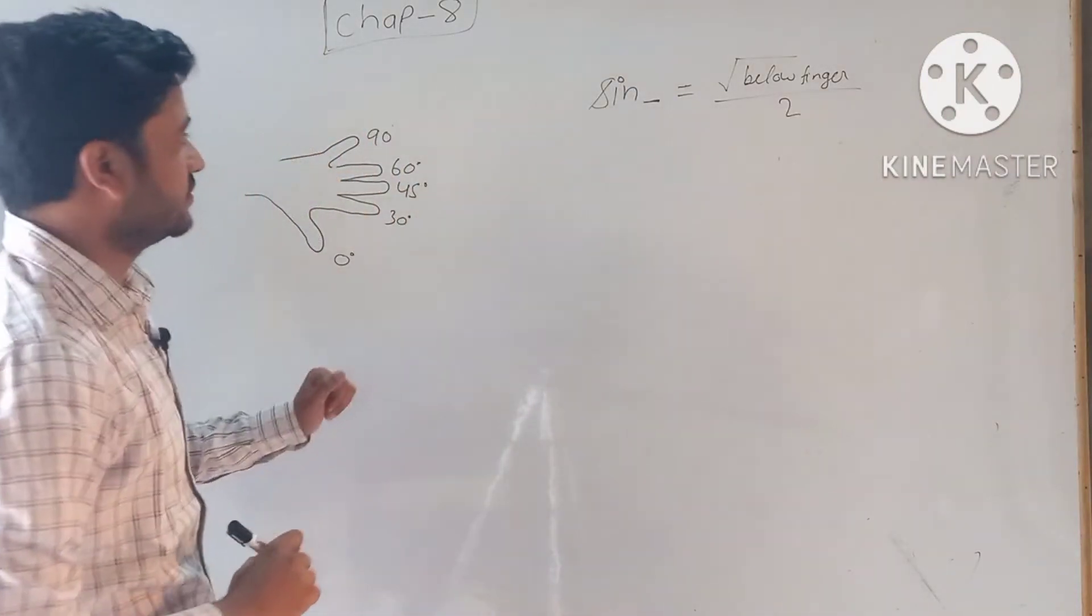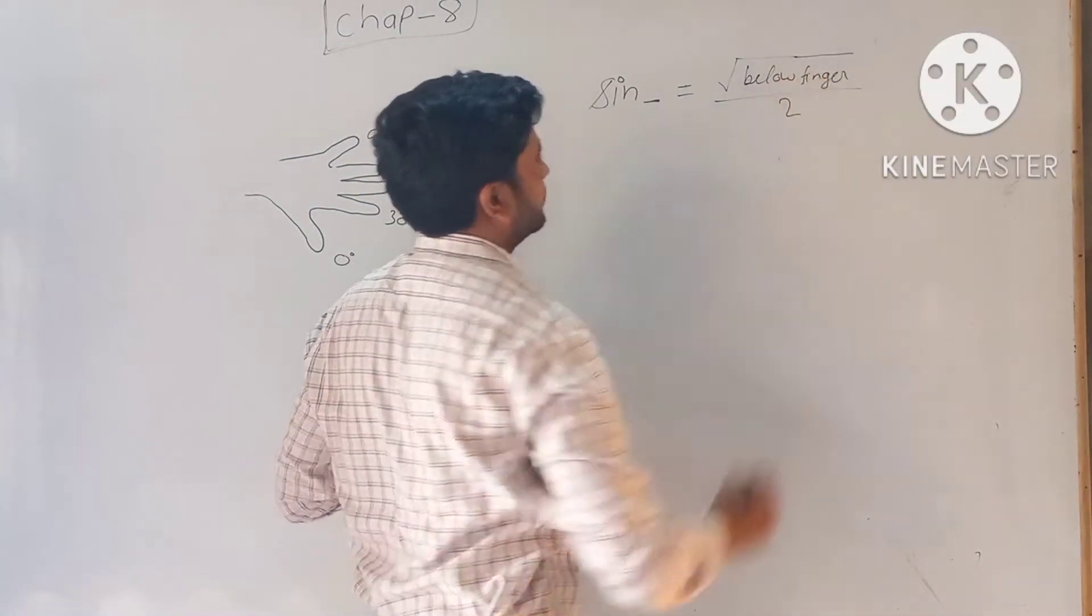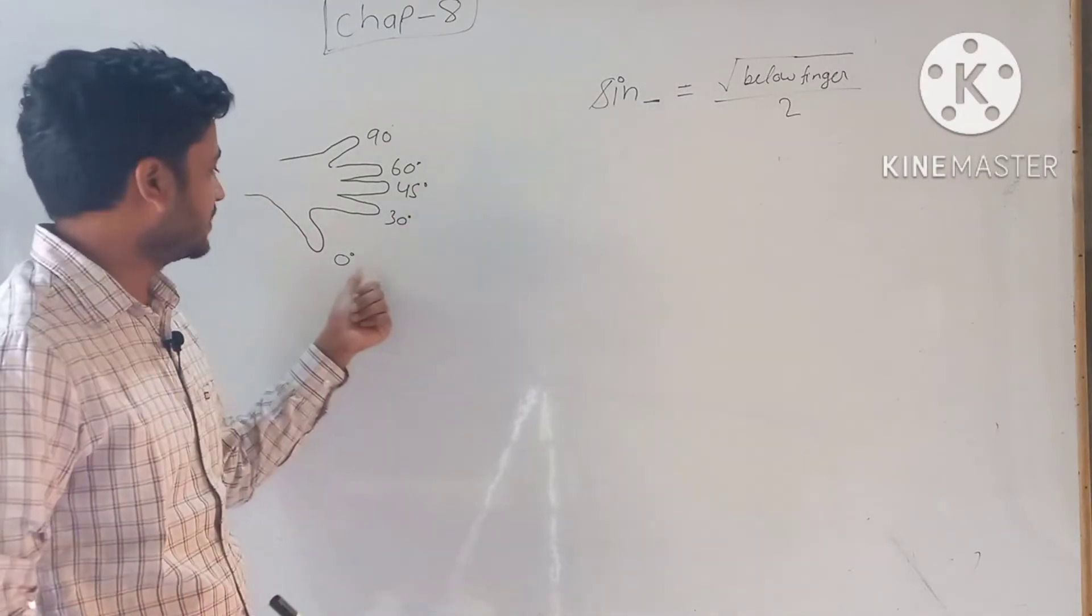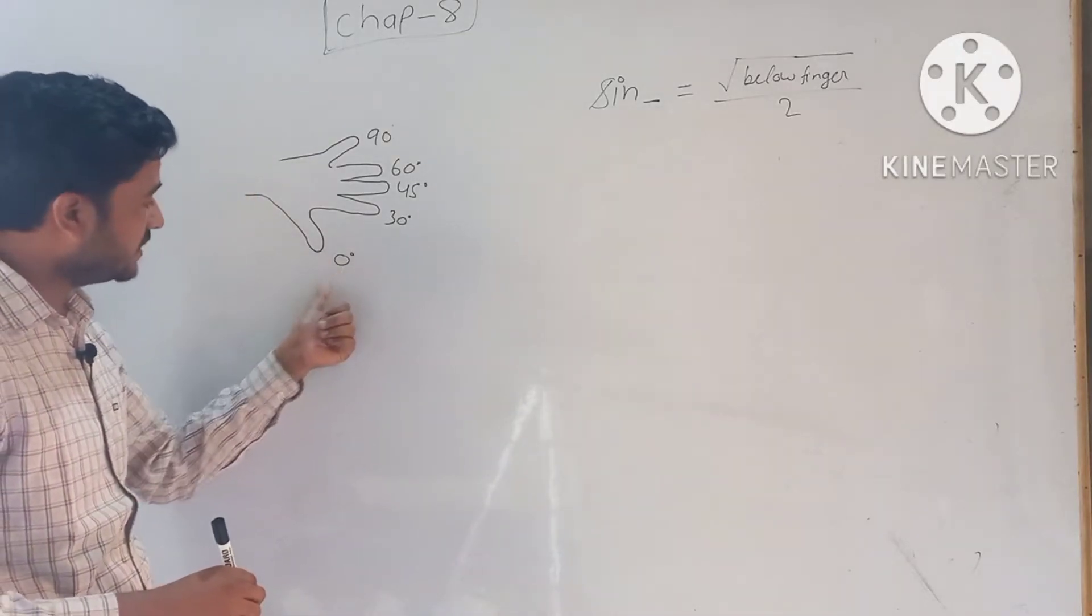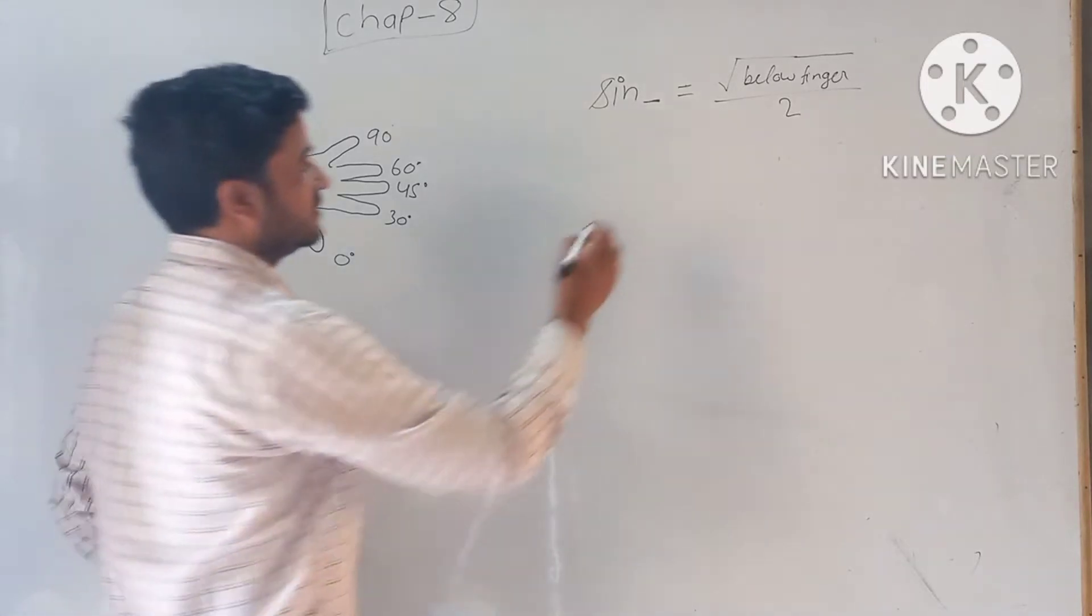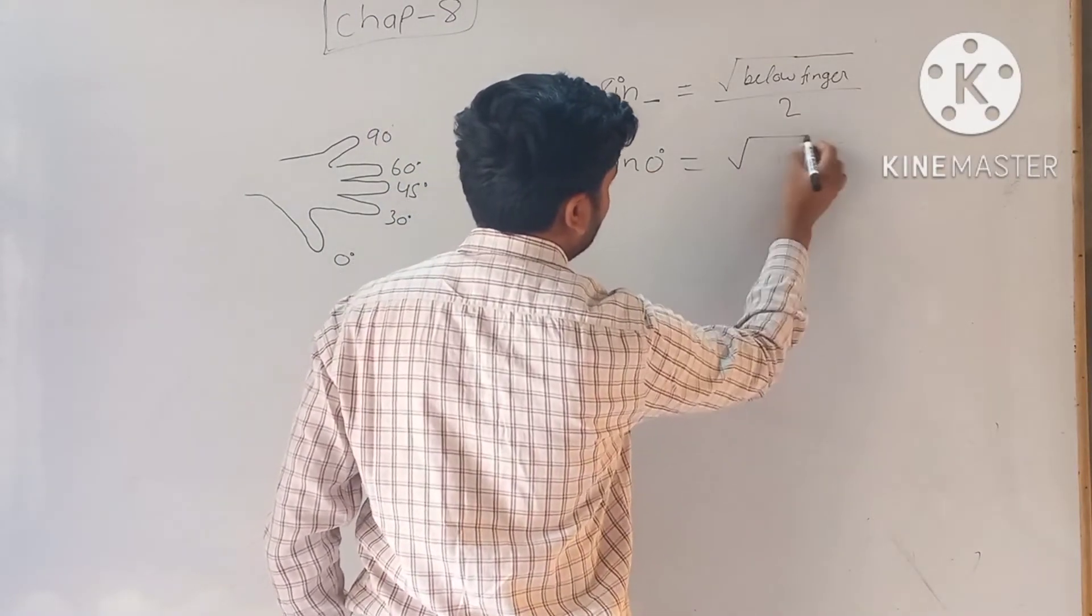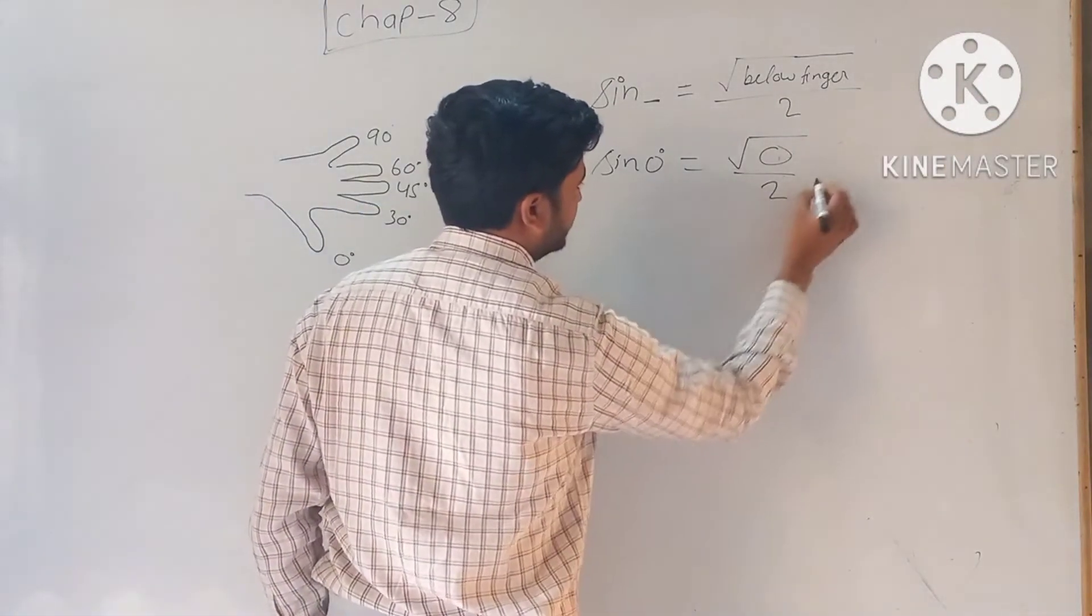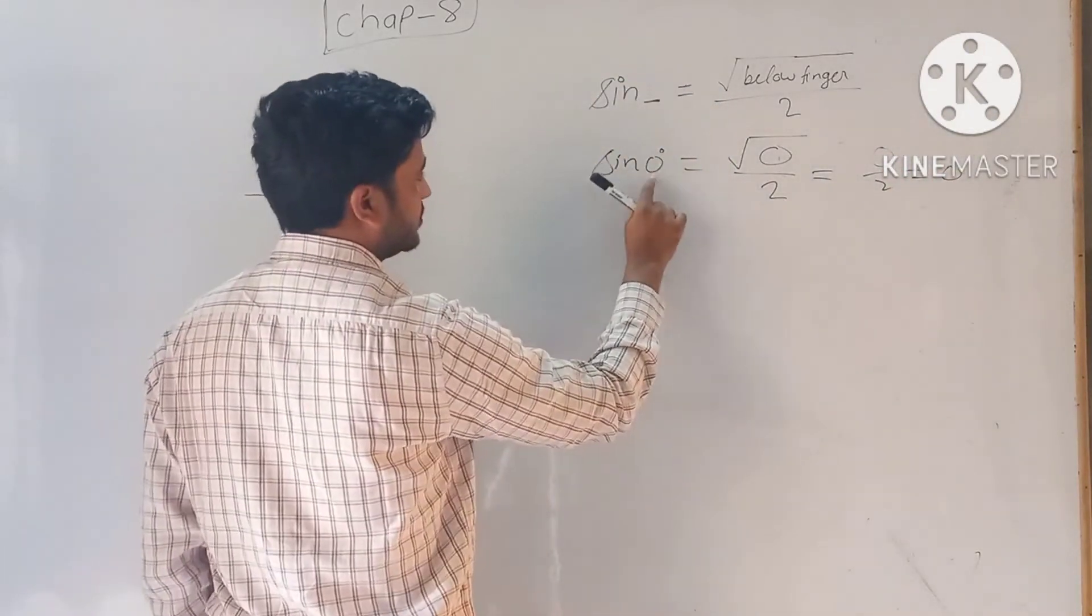Now let me show sin 0 degrees. What does the below finger mean? As we need sin 0 degrees, the below finger is 0 - no finger below means 0. So sin 0 degrees equals under root 0 upon 2, which equals 0.